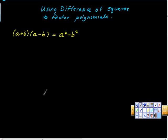I just want to do this really quick video on using the difference of squares to factor polynomials. Here's the idea of difference of squares. If we take the quantity a plus b times the quantity a minus b, we're going to get this product here.